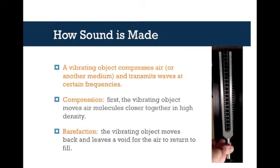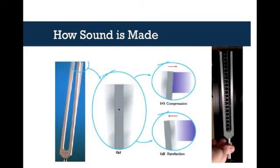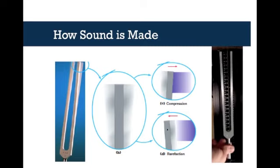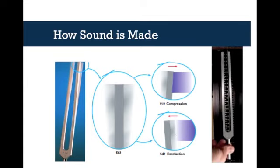Let me get you another look at what's going on. In close-up, here's your tuning fork vibrating back and forth. In the first part it's compressing the air, so you get a dense part, and then it moves back in rarefaction and you get a space where there's very low density of air. That happens over and over again, and that's how you get those traveling sound waves.